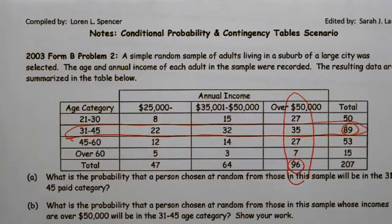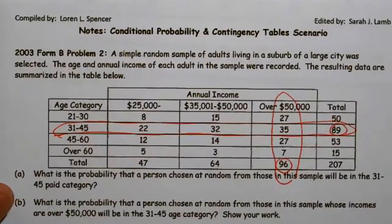This is a 2003 Form B Problem 2 question. They were very particular about this one — it is on contingency tables and independence. A simple random sample of adults living in a suburb of a large city was selected. The age and annual income of each adult in the sample were recorded. The resulting data are summarized in the table below.